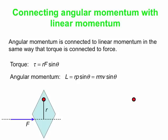We can do a very similar thing for linear momentum. We pick some axis of rotation and we have a linear momentum. We extend the line of that linear momentum and measure from the axis of rotation perpendicularly to that line. In this case, our angular momentum is R times MV, and it is counterclockwise.